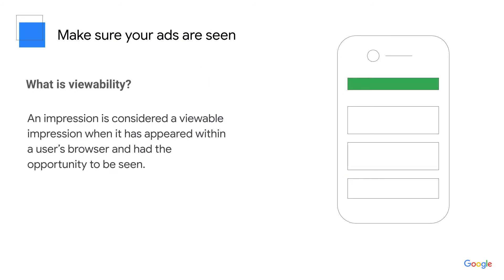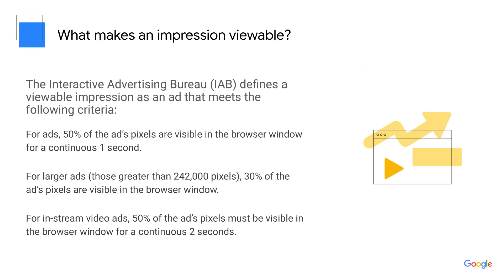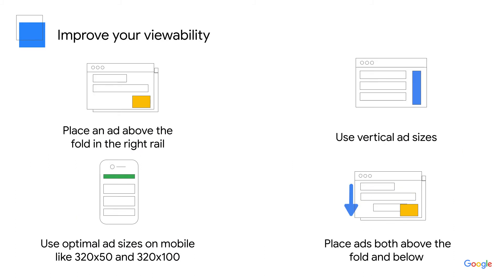Let's get into our other key component: viewability. What is viewability? Viewability is a measure of how viewable an ad impression is. Ad Manager uses a feature called Active View to help keep track of this. The Interactive Advertising Bureau, or IAB, defines a viewable impression as an ad that meets the following criteria: for display ads, 50% of the ad's pixels are visible in the browser window for one continuous second. Advertisers want their ads to be viewable, so viewability is an important metric.